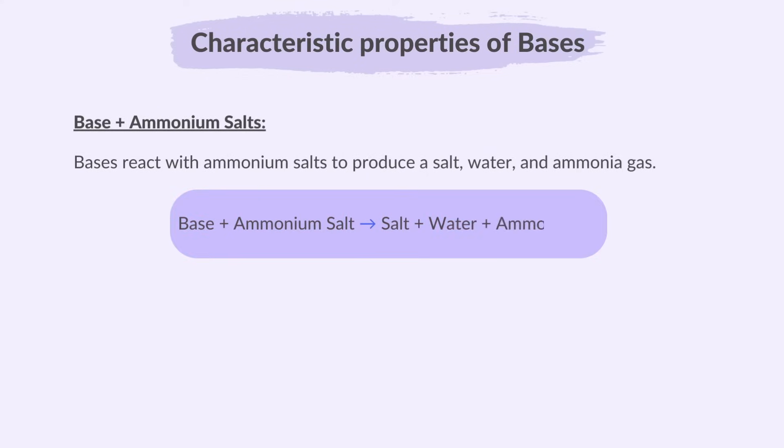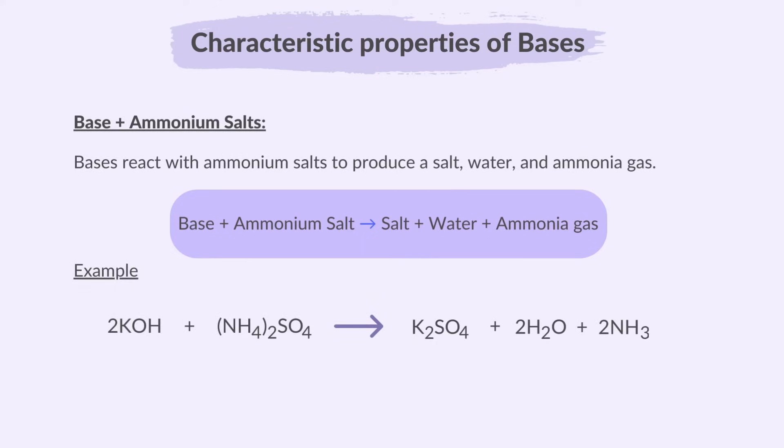Bases react with ammonium salts to produce a salt, water, and ammonia gas. For example, potassium hydroxide reacts with ammonium sulfate, which is an ammonium salt, to give potassium sulfate, which is a salt, water, and ammonia gas.